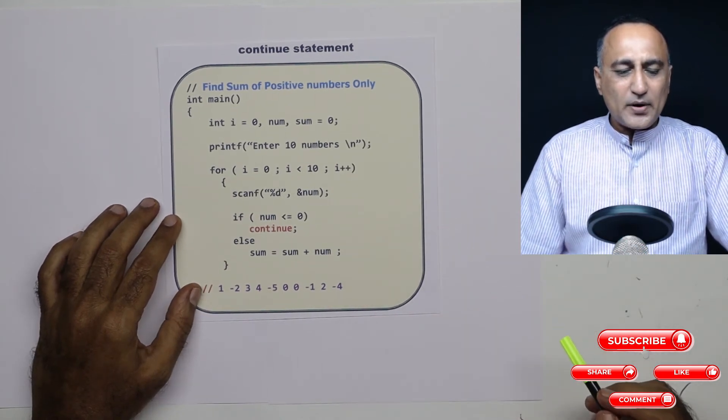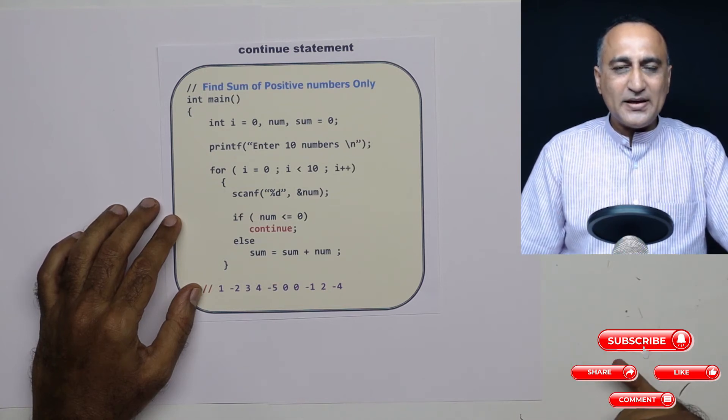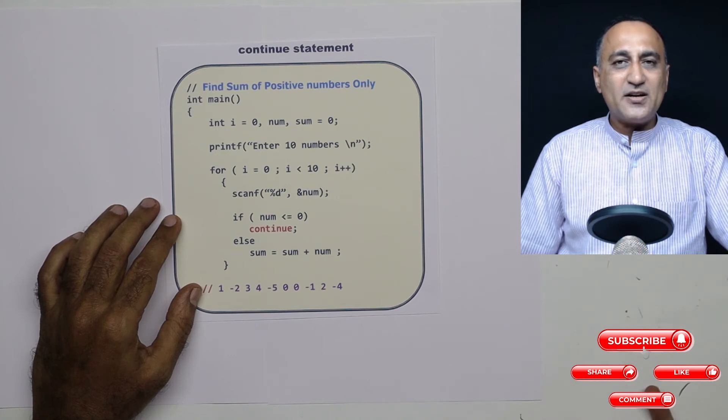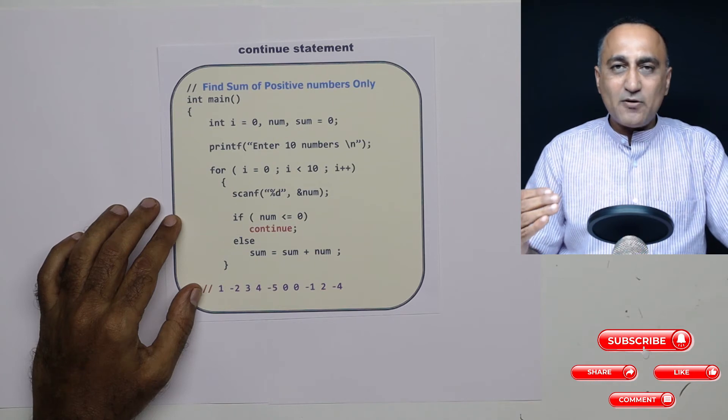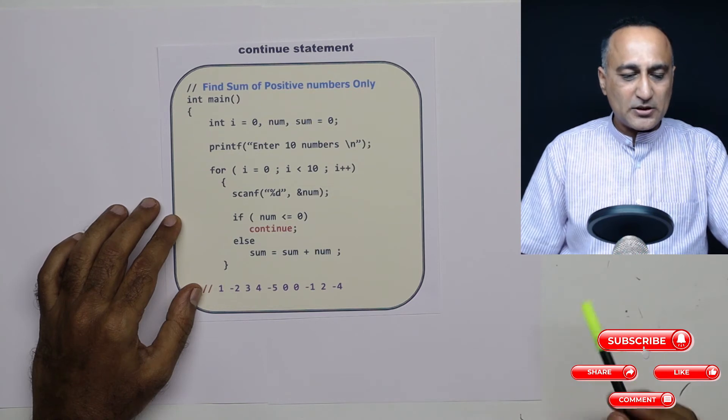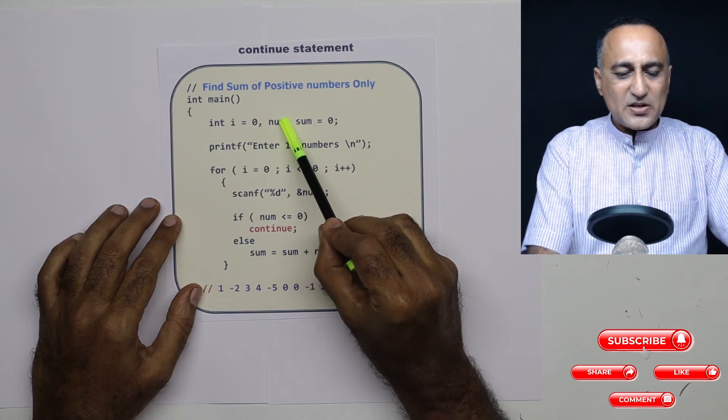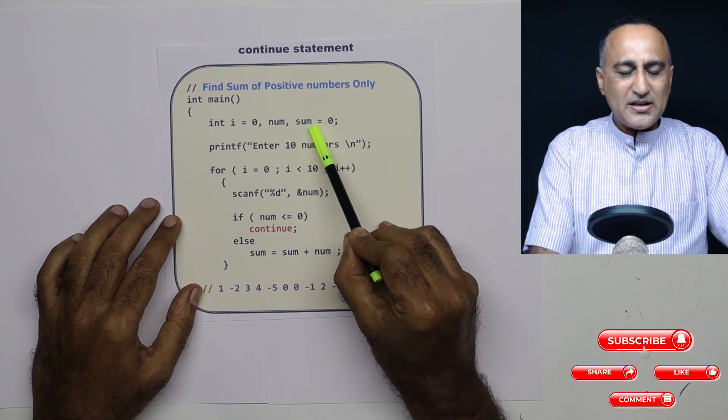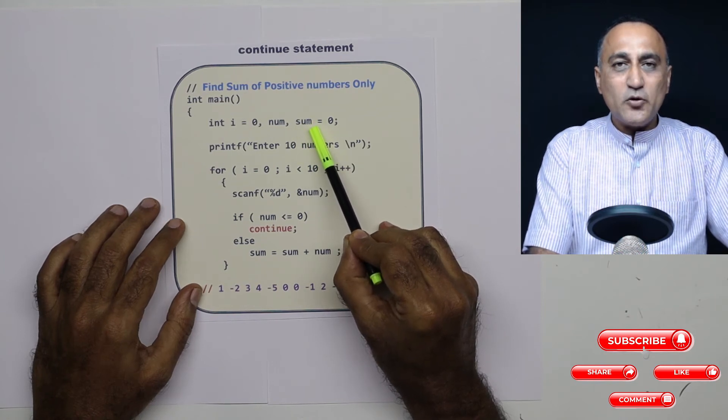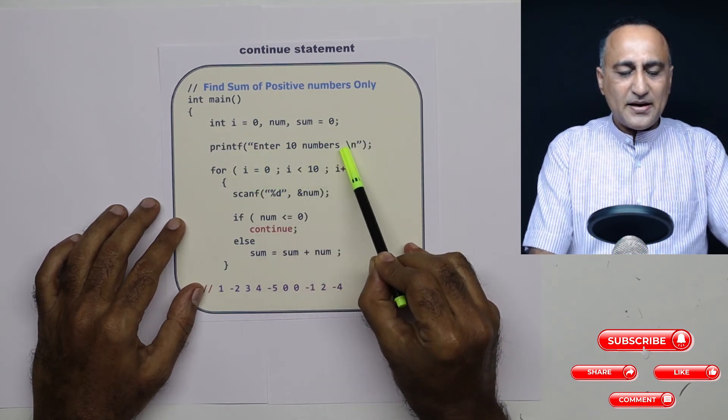Let's say I am trying to write a small program where I am trying to find the sum of positive numbers only. If the number happens to be negative, I am not adding it to the sum. So here I am interested to find the sum of just only 10 input numbers by the user. I have declared a variable i as 0. This is the variable which is going to read the number from the user. This is the variable which is going to store the sum. So I am asking the user enter 10 numbers.